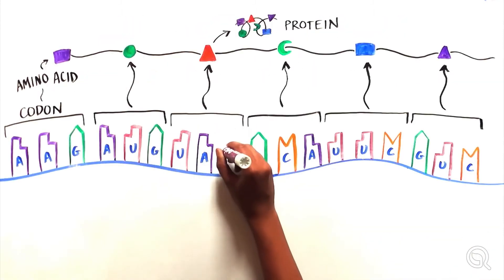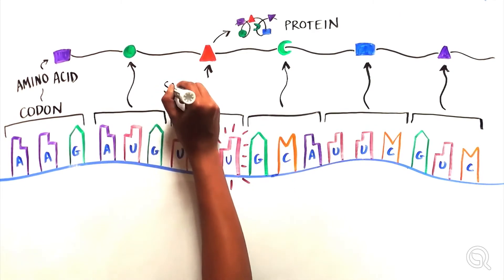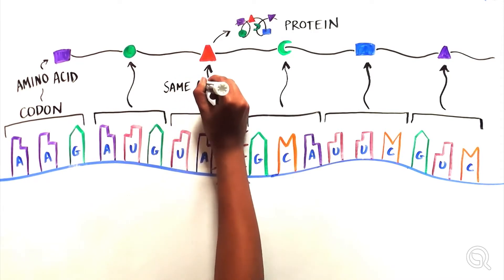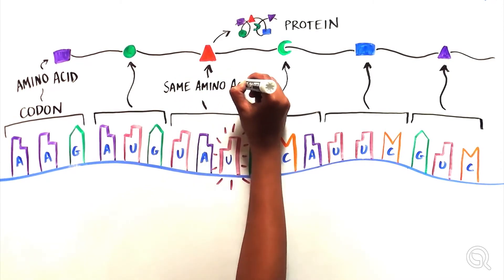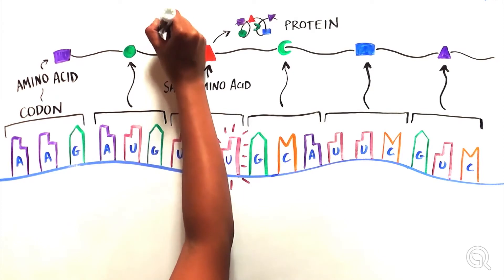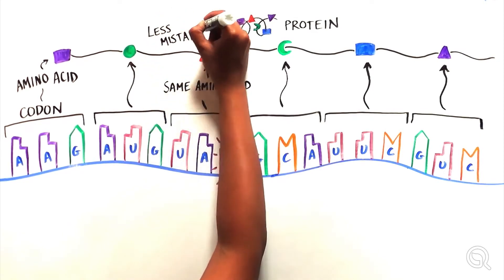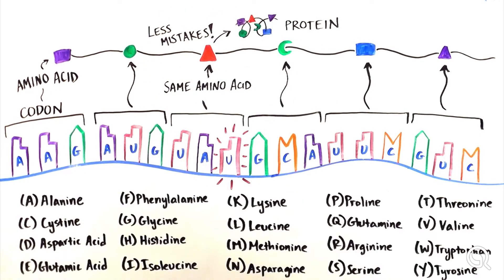And this redundancy is important. Among other things, it provides an extra layer of safety in case the wrong nucleotide base is placed in a particular location, which helps ensure that fewer mistakes are made during the translation process. Along the bottom here are the amino acids shown in their simple single-letter form.